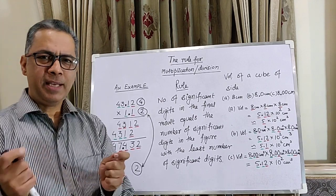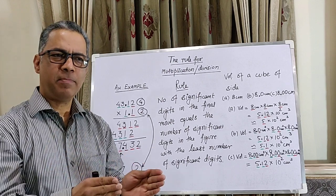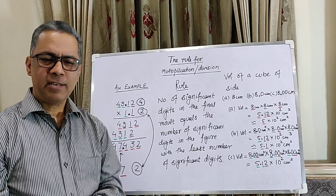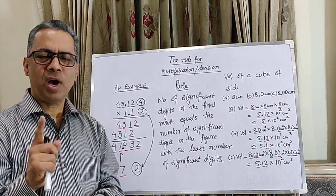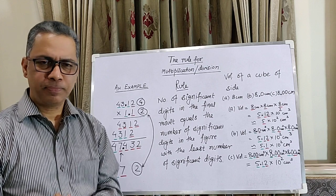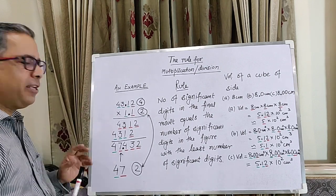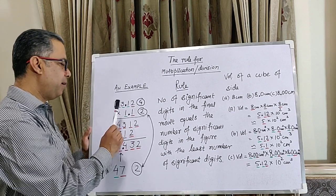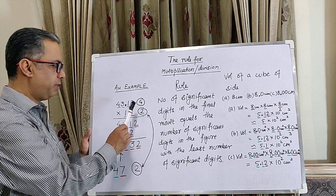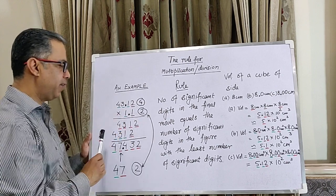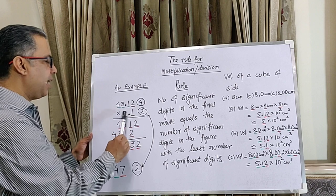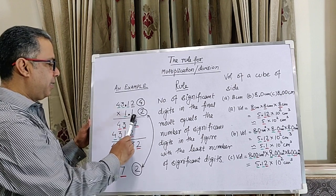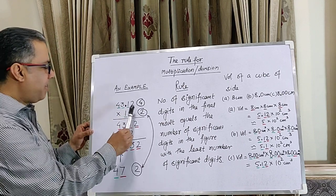We will be learning how we can develop a simple set of rules for reporting an answer so that we report the answer with only one uncertain digit. Let's take a calculation example. In this example I am multiplying two numbers with each other — the first has four significant digits, the second has two significant digits. The green digits are certain and the red digits are uncertain.